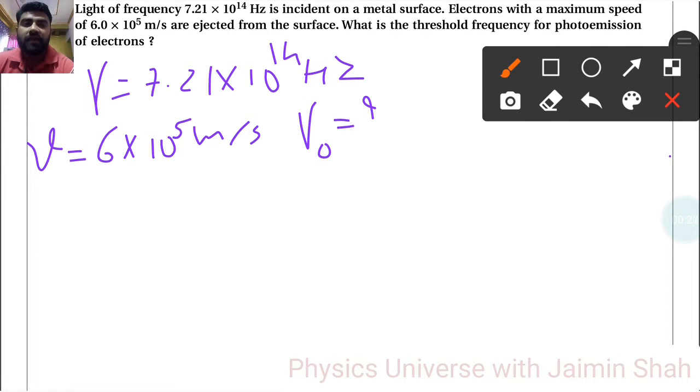The formula for that is ½mv² = h(ν - ν₀).